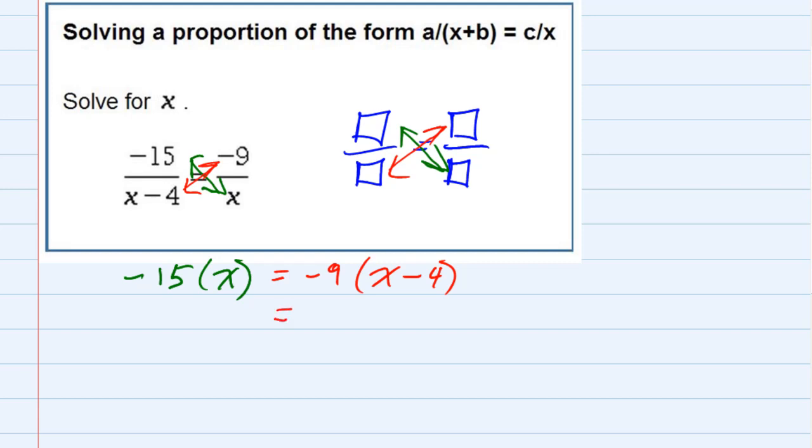In my first step, I'll simplify the left-hand side: negative 15 times x is negative 15x. But on the right-hand side, I need to distribute: negative 9 times x is negative 9x, and negative 9 times negative 4 is positive 36.